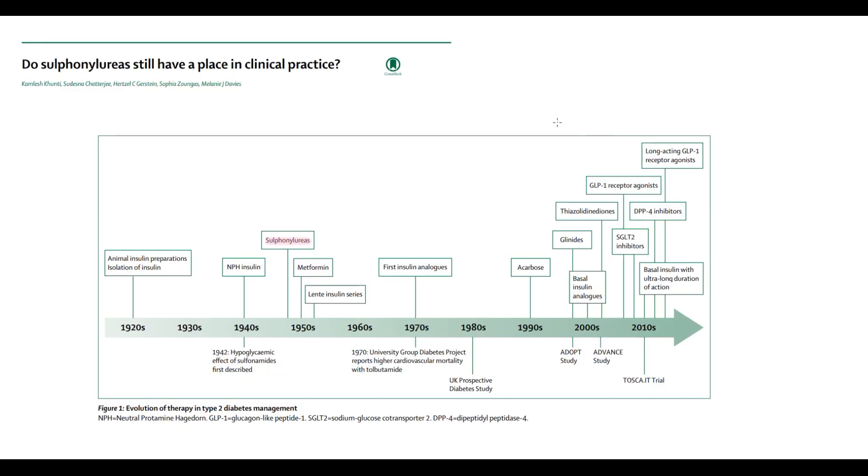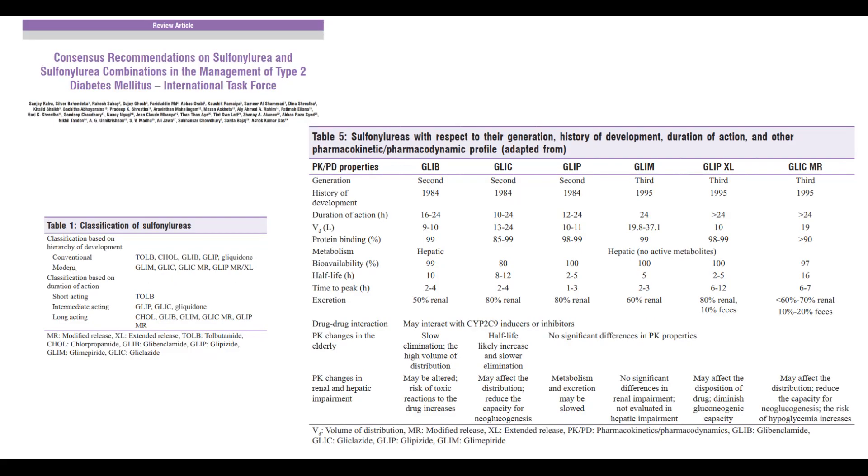Sulfonylureas are one of the oldest medications in treatment of diabetes. They were discovered even before metformin. We can classify sulfonylureas by generations: second generation, so-called conventional, and third generation, so-called modern. And also, we can classify them based on duration of their effects.